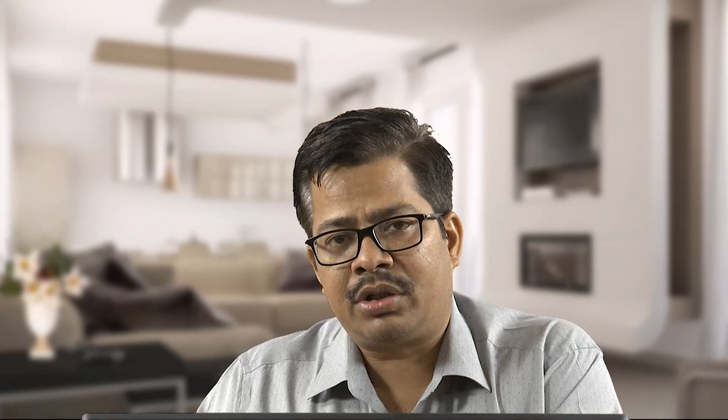The third important subsystem is the output — what type of products and services you are requiring. Depending upon the customer's choice and the target customer, we require inputs from the marketing information system as well. Your market research department closely monitors the behaviour and changing patterns of customers, giving you information about what is desirable and what the customer's expectations are, so that you can build those expectations right from the design stage in your product.